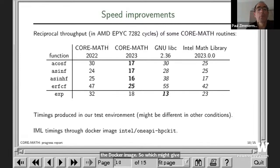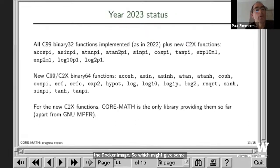This year we have implemented more functions, especially the new functions from the C2X standard: the sine pi, cos pi, and tan pi, which computes the sine of x times pi, and the corresponding inverse functions, and also some extensions of exp of x minus one and log of one plus x to a different basis.